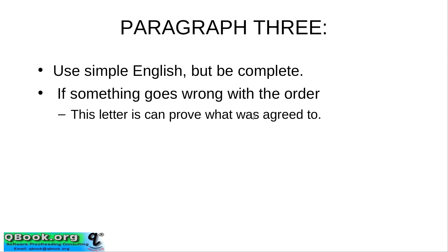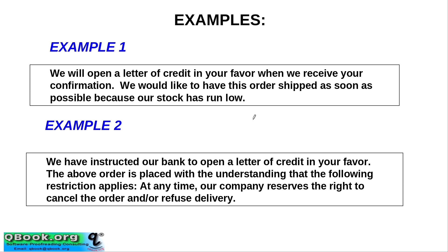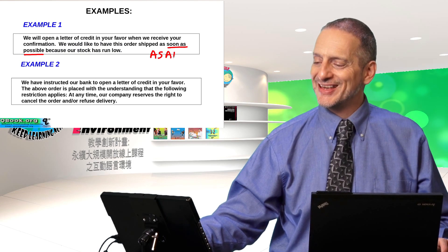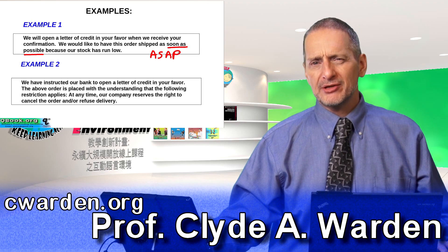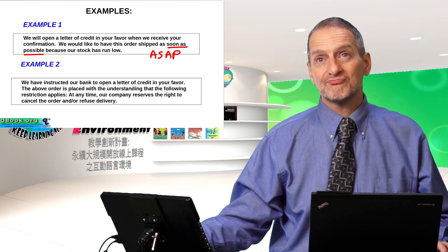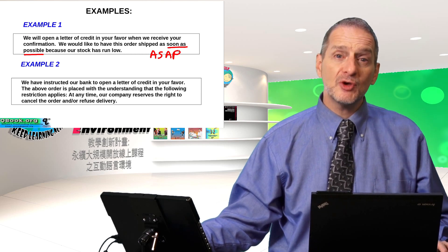Example number one: 'We will open a letter of credit in your favor when we receive your confirmation. We would like to have this order shipped as soon as possible because our stock has run low.' Personally, I'm not sure I like 'as soon as possible' or ASAP. I think it would be better to write a specific date. If you have a real deadline, you should state what it is.